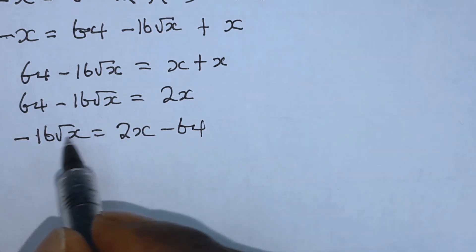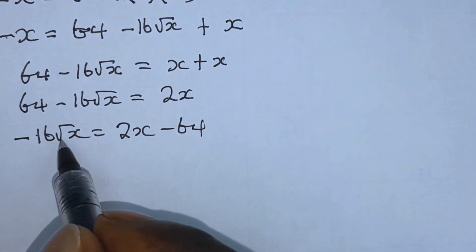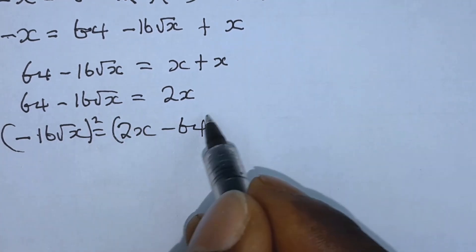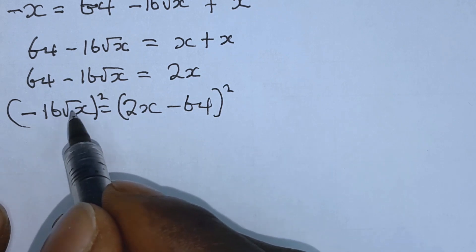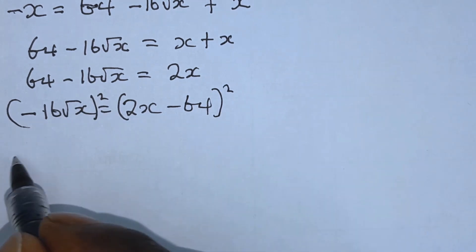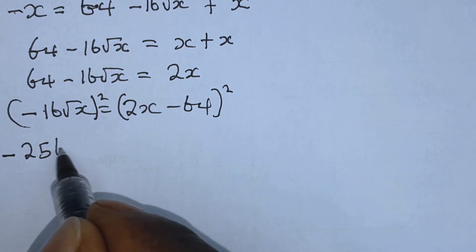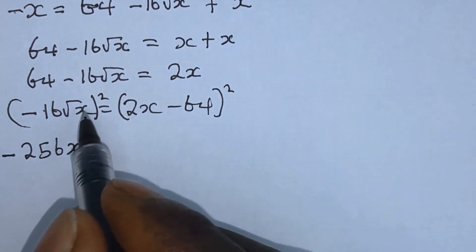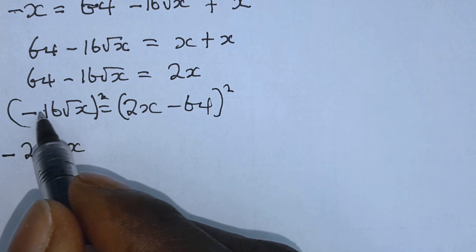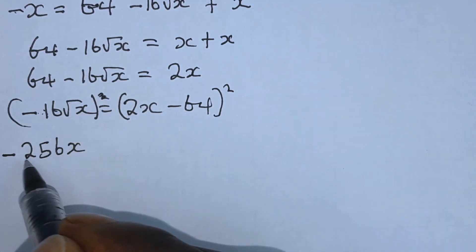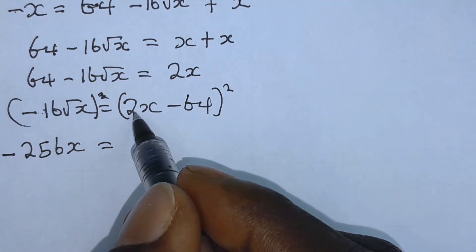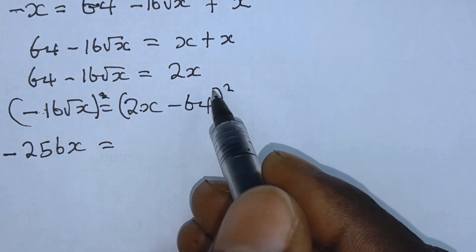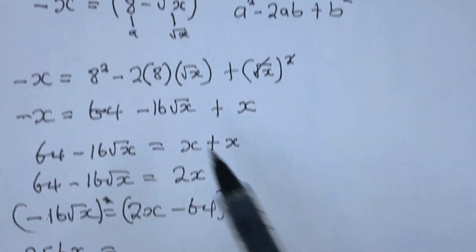From this step we square both sides again. Minus 16 root x squared is the same as minus 256 root x, meaning the square cancels with the square root of x, leaving minus 256x. So we are left with minus 256x which is equal to 2x minus 64, all squared.